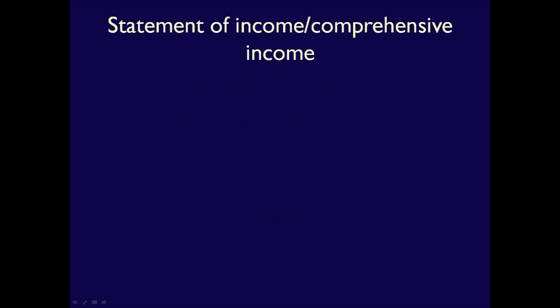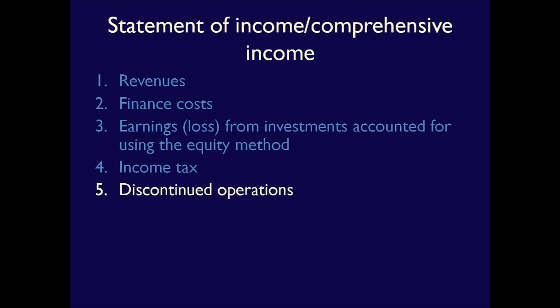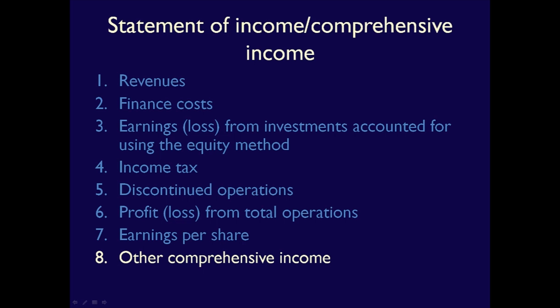There are nine required line items. First is revenues. Second, costs incurred for financing the business. Third, profit or loss from associates or joint ventures accounted for using the equity method. Fourth, income tax expense or refund from continuing operations. Fifth, discontinued operations net of income taxes. Sixth, profit or loss, also called net income or net loss. Seven, earnings per share for continuing and discontinuing operations. Eight, other comprehensive income with details. Nine, comprehensive income.